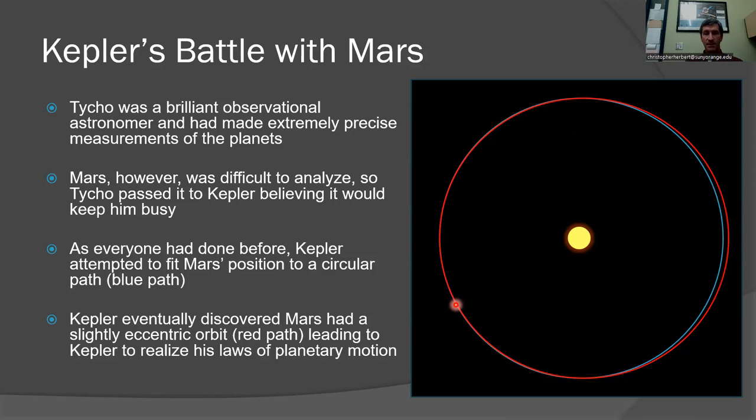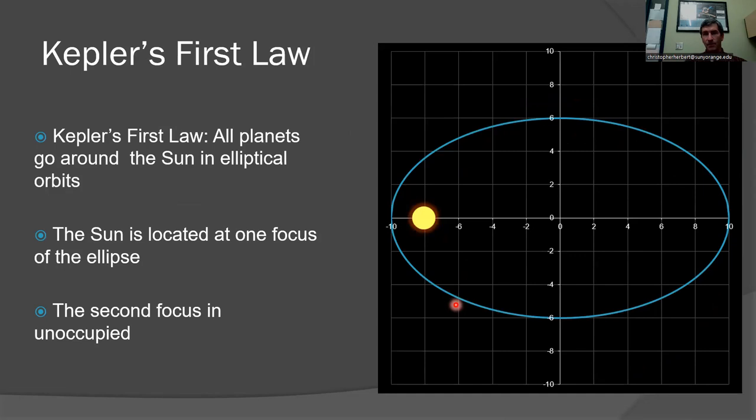Circles are a subset of ellipses. So the fact that these planetary orbits are so close to being a circle, but not quite, is not exactly surprising. So Kepler's first law was very basic: All planets go around the sun in elliptical orbits. The sun sits at one of the foci of the ellipse.